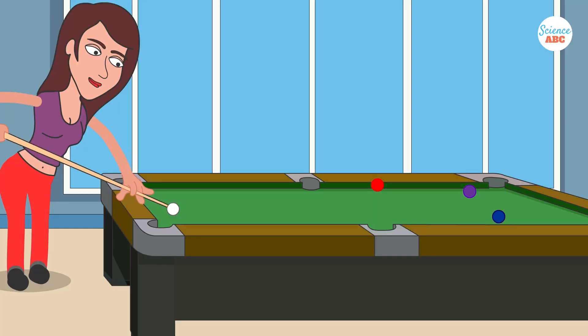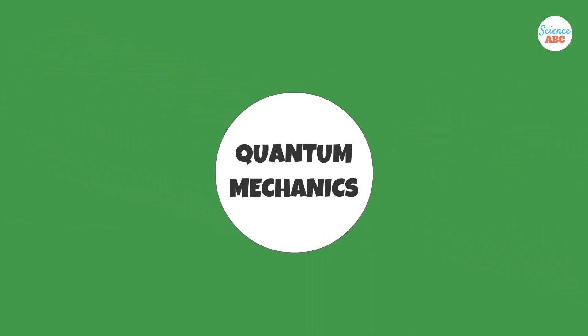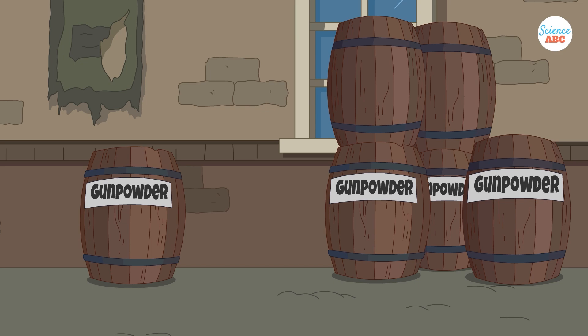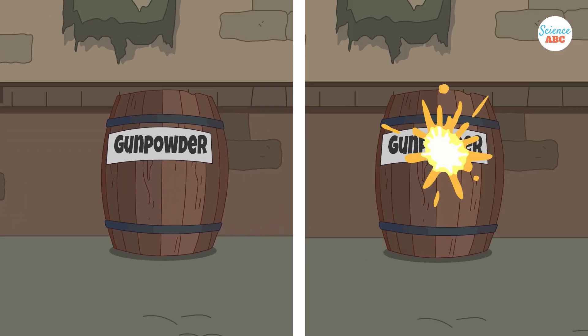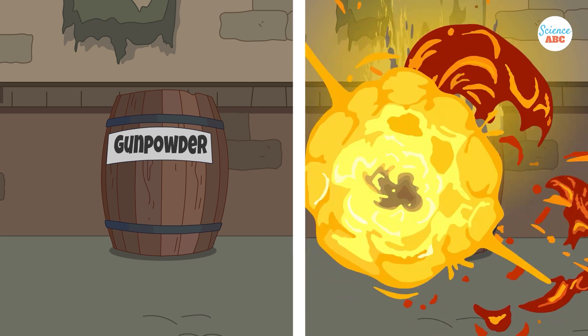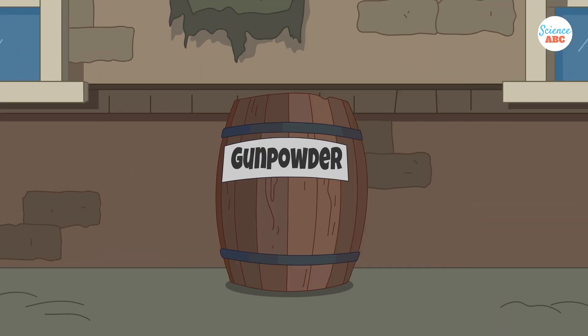If quantum mechanics truly described reality fully, then even everyday objects, like a keg of gunpowder, could exist in a superposition. In other words, the keg could be both exploded and unexploded at the same time. That seemed hard to accept.